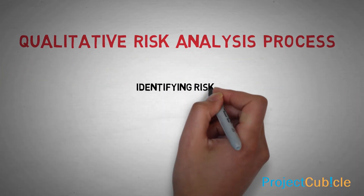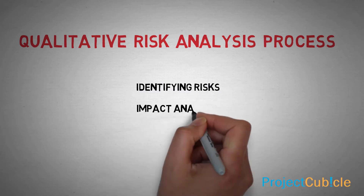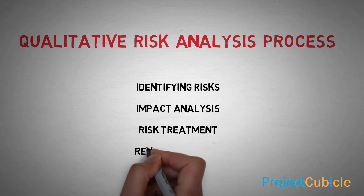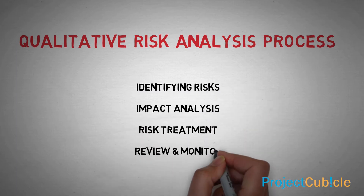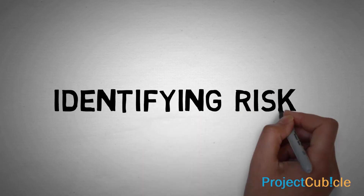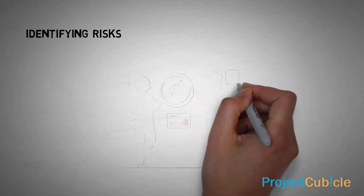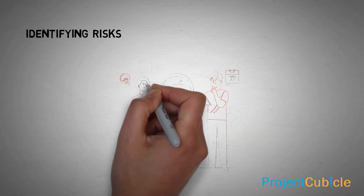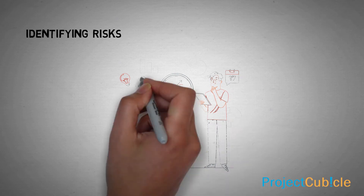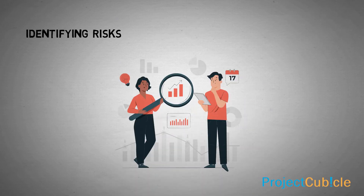The qualitative risk analysis process consists of: identifying risks, impact analysis, risk treatment, and review and monitor. Risk identification is arguably the most important part of qualitative risk analysis — if you fail to identify risks ahead of time, it will be challenging to manage them.